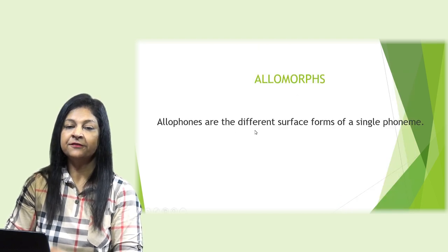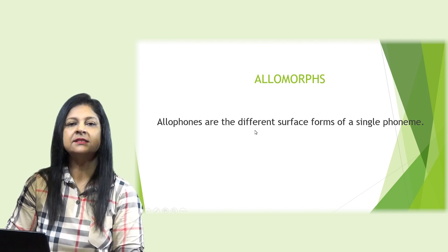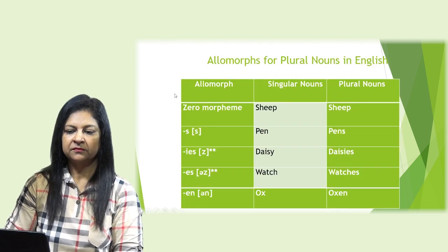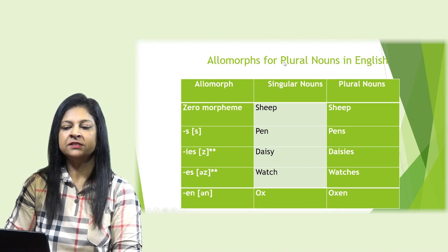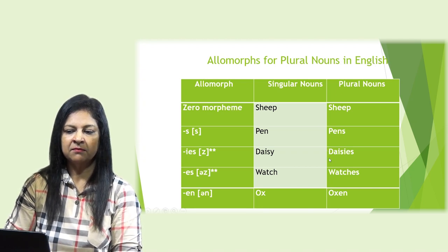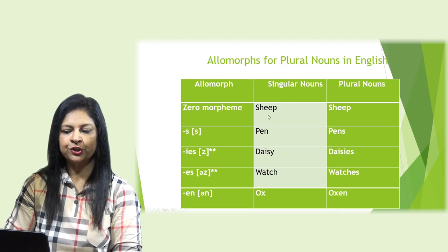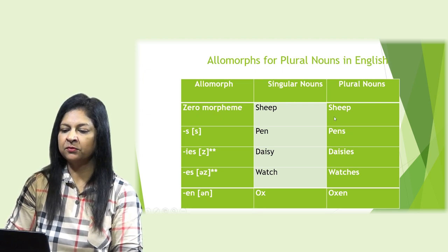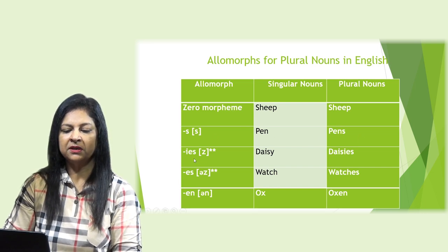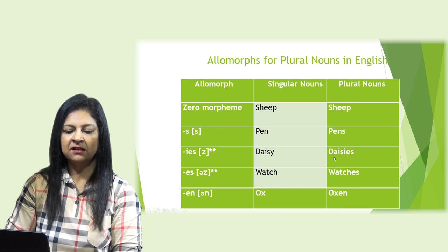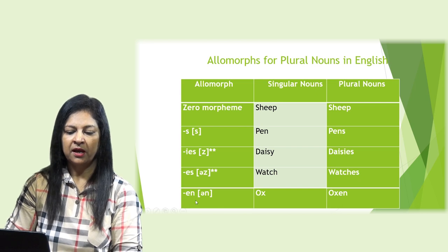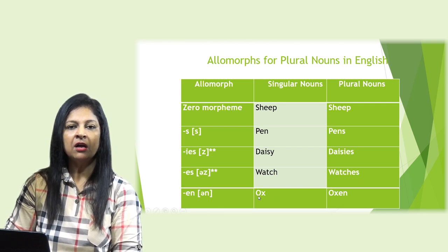Allomorphs are the different surface forms of a single morpheme. Looking at the table of allomorphs for plural nouns in English: the zero morpheme (no change) — sheep remains sheep. -s gives pen → pens. -es gives daisy → daisies. -es gives watch → watches. And an irregular allomorph gives ox → oxen.